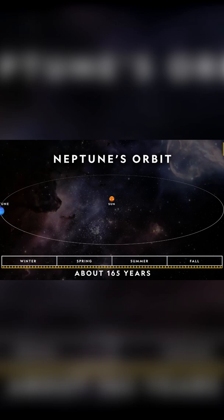Being so far away from the heat and light of the sun, Neptune is cold, dark, and icy.